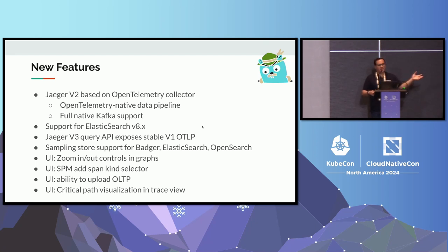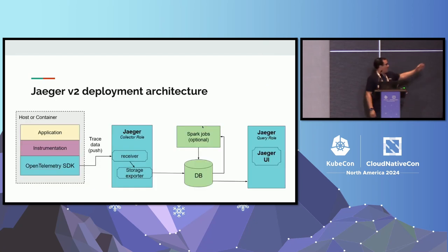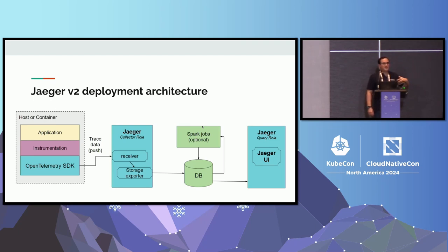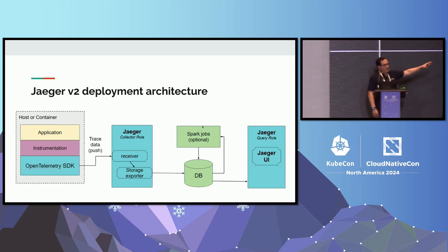We've also made a bunch of other enhancements in the user interface, improving the usability and features within the UI. On the left-hand side you instrument your application with OpenTelemetry — either automatically, manually, or various other ways. The data then flows into the first part of Jaeger, which we call the collector role. This takes in the data, allows you to process, manipulate, filter, and sample it, and then sends it to a backend. Jaeger today officially supports Elasticsearch, OpenSearch, and Cassandra. We're also working on ClickHouse as a natively supported backend. The front-end reads from the database — it's all microservices architecture, stateless except for the database, and easy to deploy on Kubernetes.